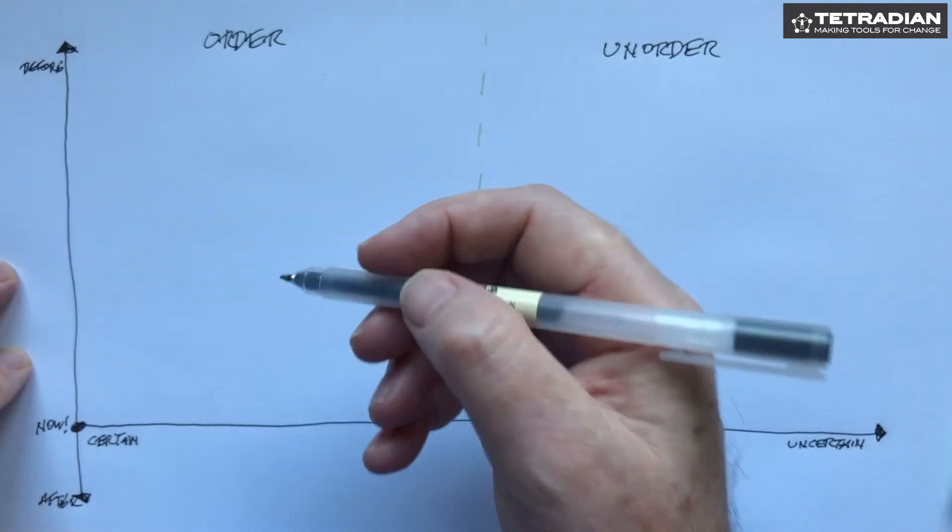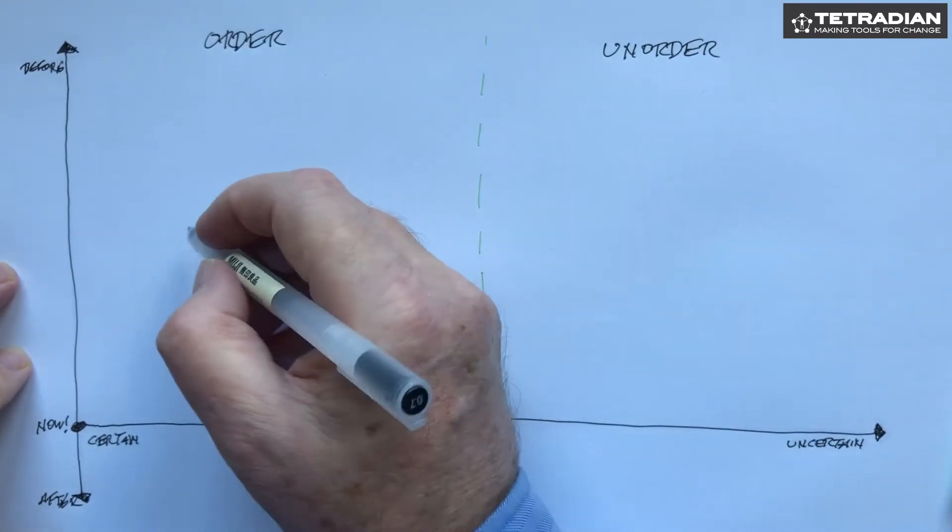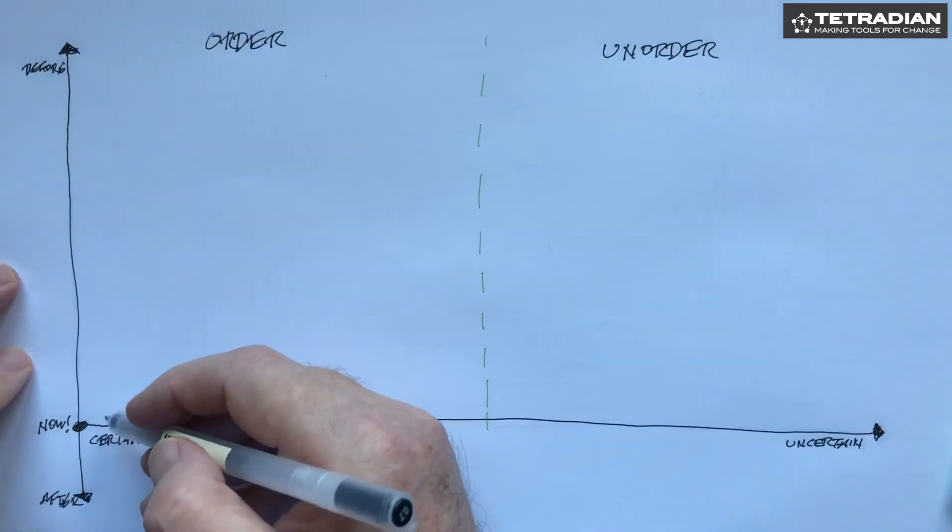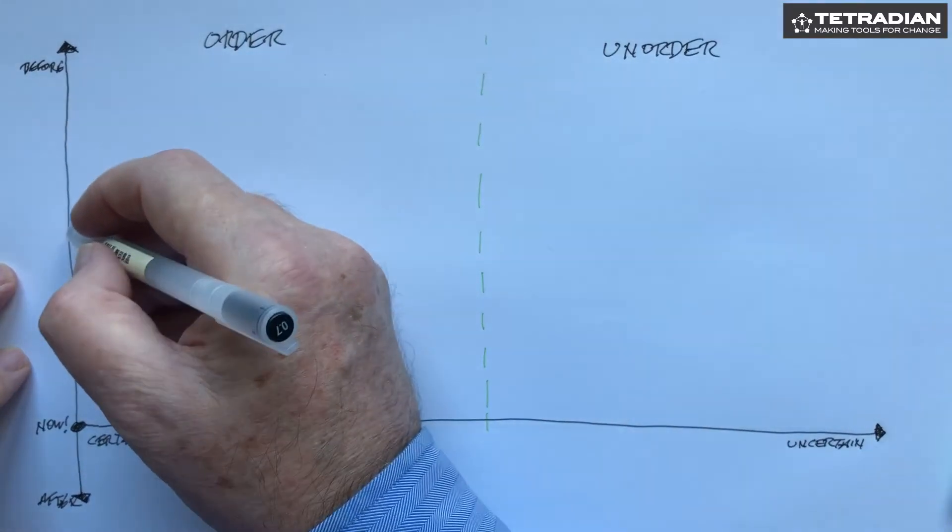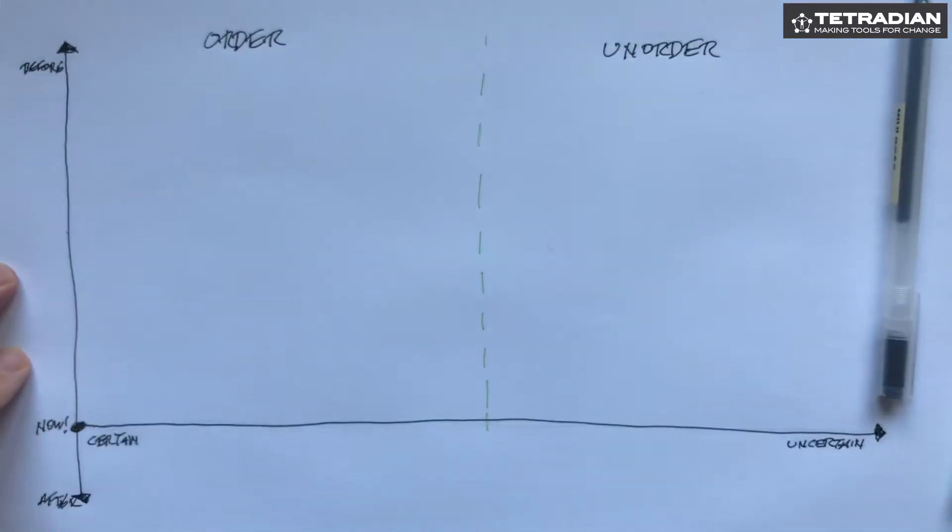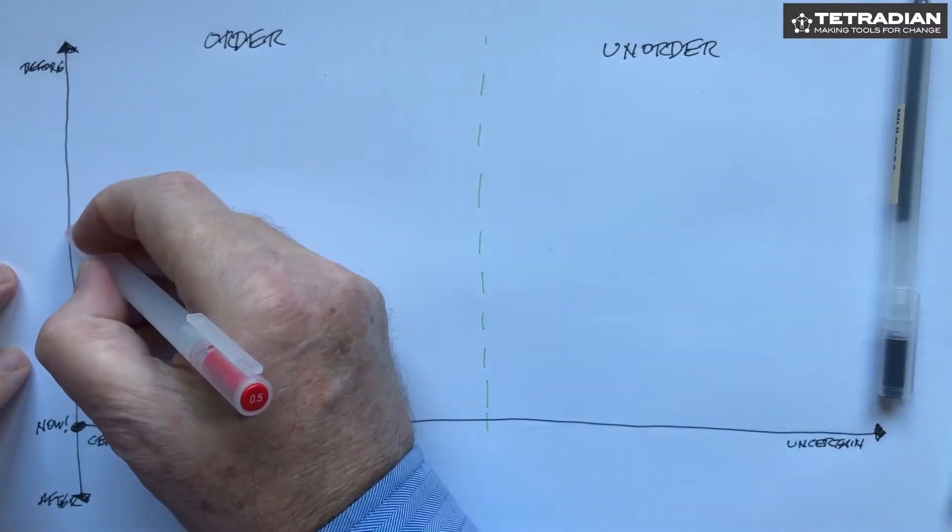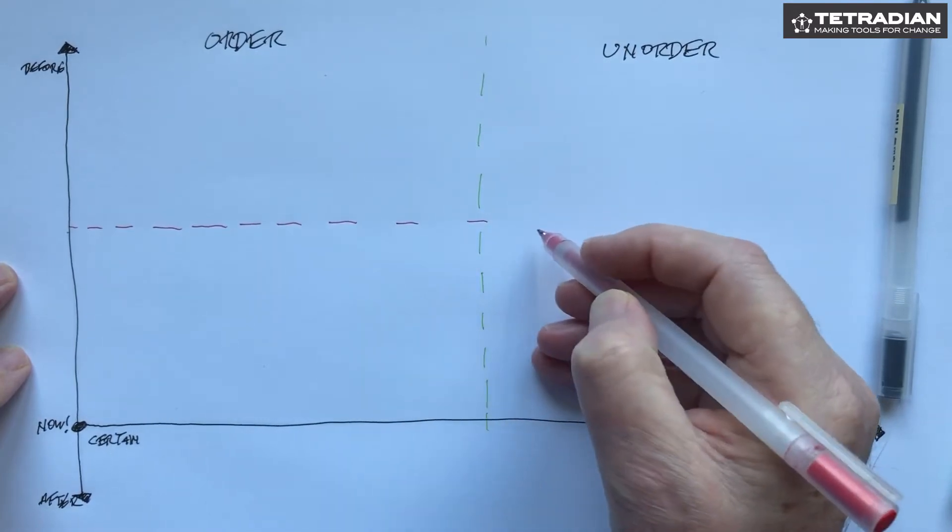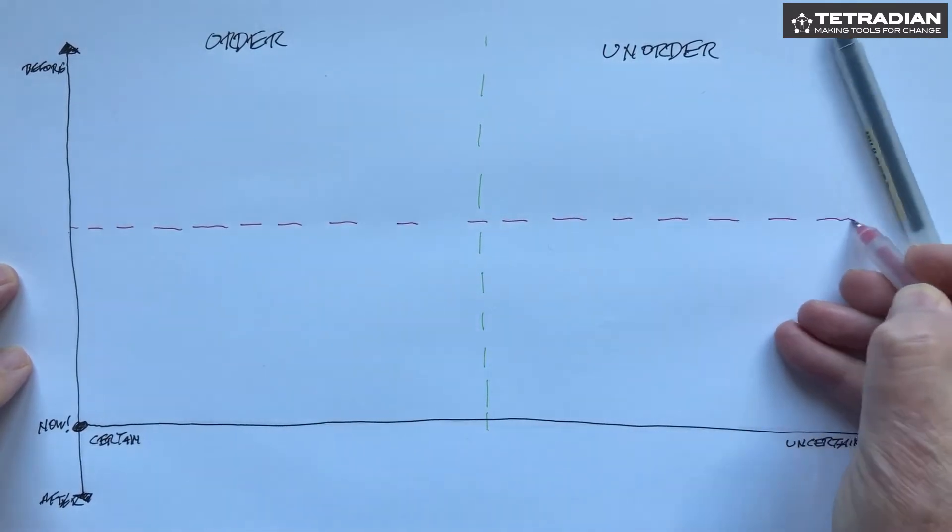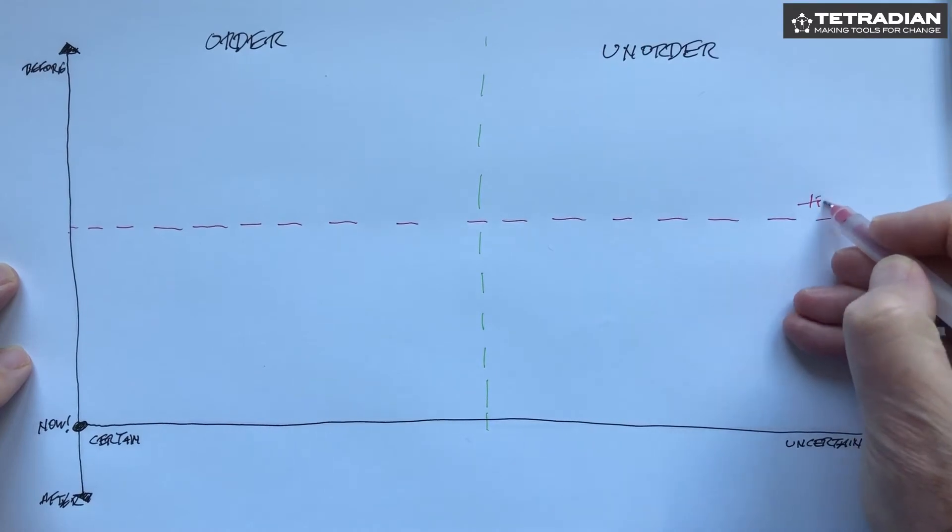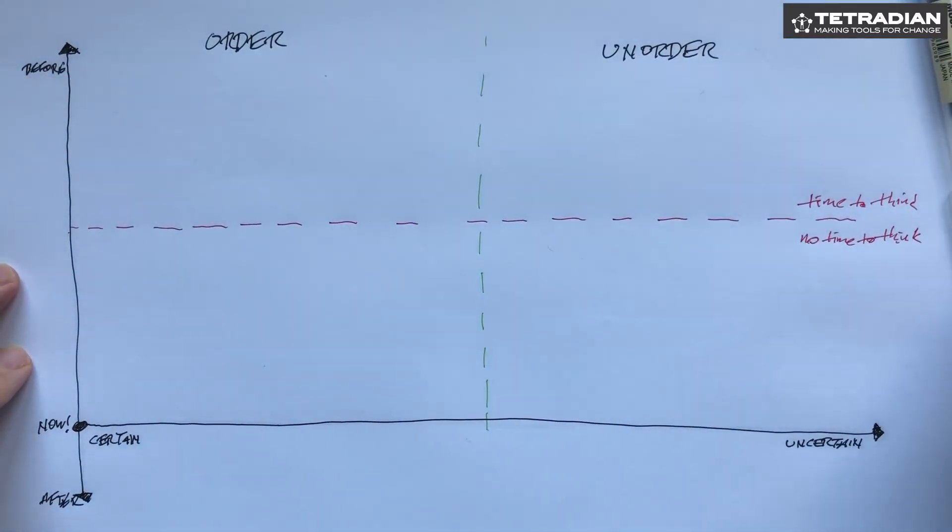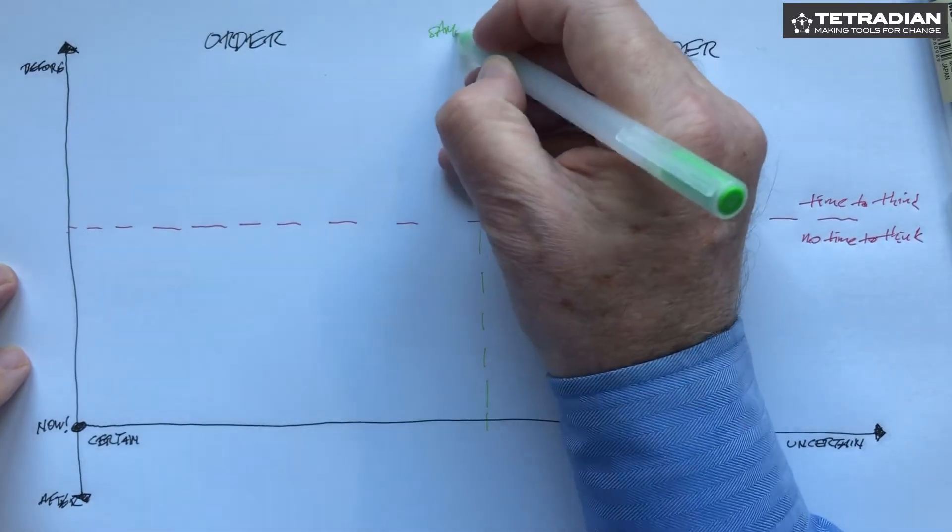So we can look at this and say there's a boundary here, different kinds of decisions going on. As we get closer to the moment of action we run out of time to think, and so there's a boundary we can use here which is that transition from time to think to no time to think left. So that's time to think, and back here we had same different.